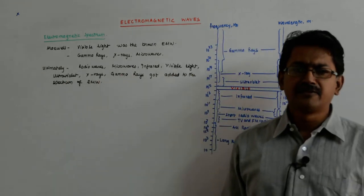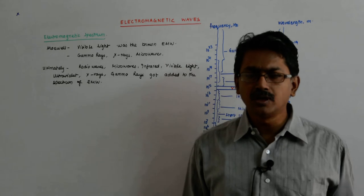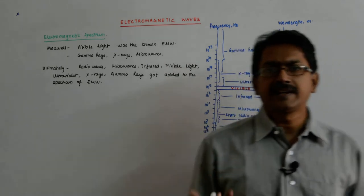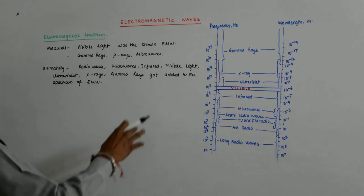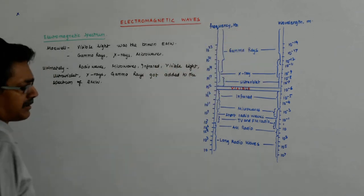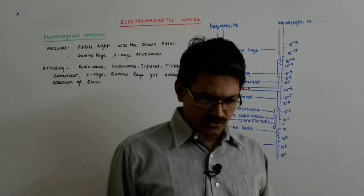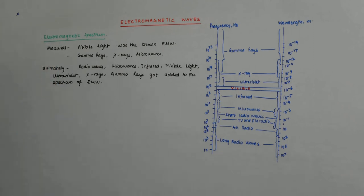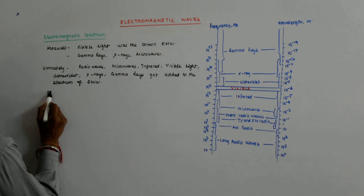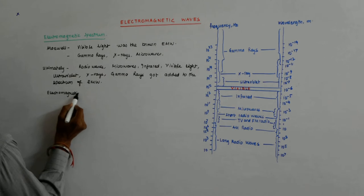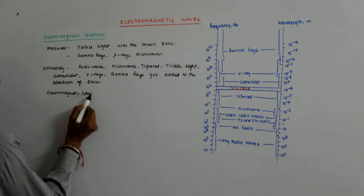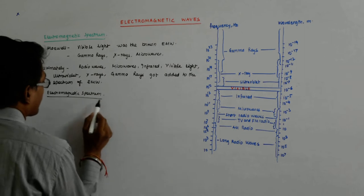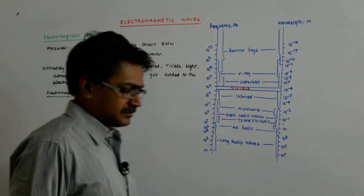All of them have different usage in the modern world, but to study them, we again go into a classification which we have been doing in biology, which we have been doing in chemistry. The same kind of classification we do for electromagnetic waves and that is known as electromagnetic spectrum.